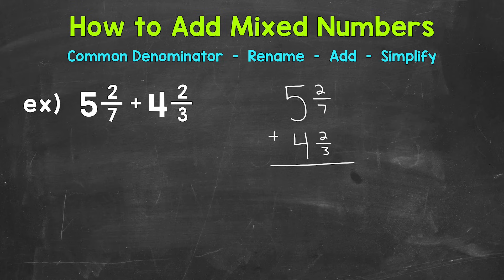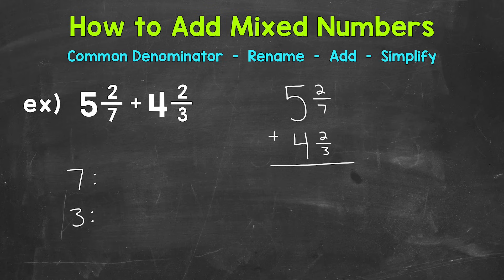In order to find a common denominator, we need to find a least common multiple — that's going to be our least common denominator. You may be able to figure out the least common multiple between 7 and 3 without writing out the multiples, but as a review I'll write them out. Let's start with 7 and write out the first four multiples: 7, 14, 21, 28.